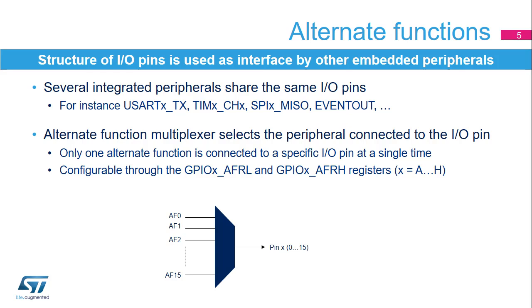Several integrated peripherals, such as the USART, Timers, SPI, and others, share the same I/O pins in order to interface with the external environment. Peripherals are configured through an alternate function multiplexer, which ensures that only one peripheral is connected to an I/O pin at a single time. This selection can be changed while the application is running through the GPIO-X AFRL and AFRH registers.